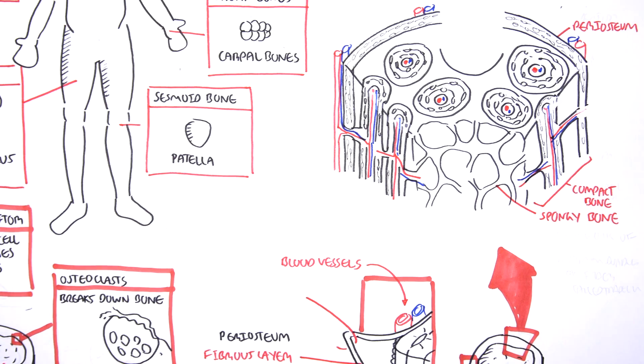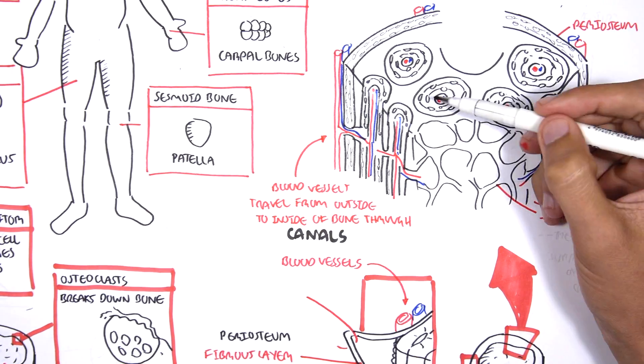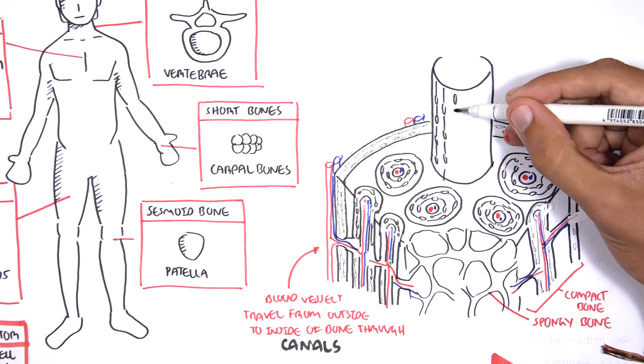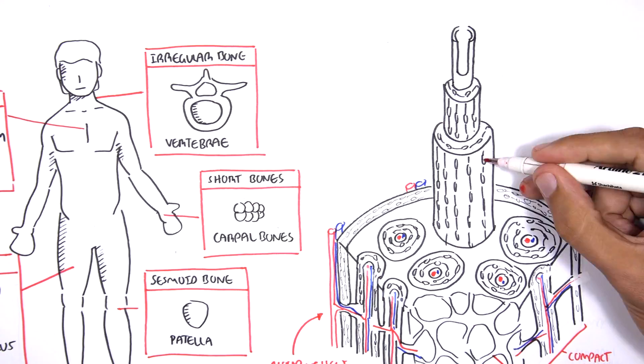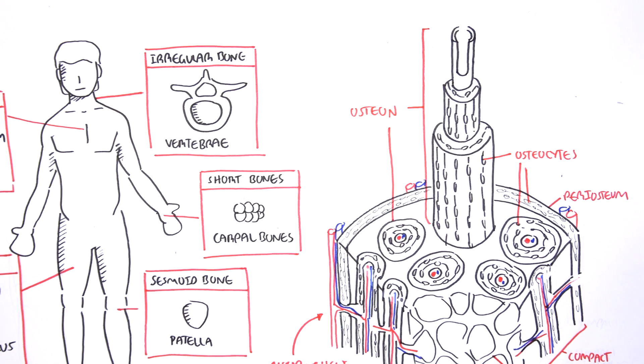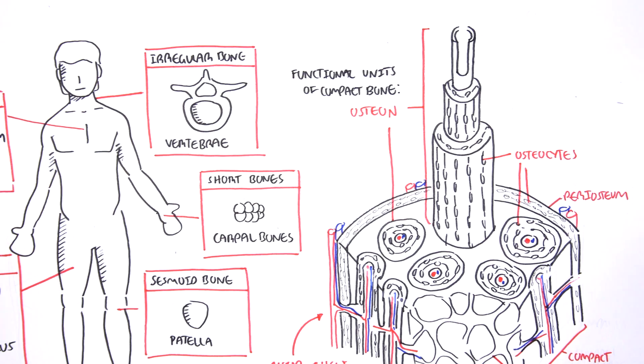The blood vessels travel from the outside to the inside of the bone through canals. Now remember, the compact bone is mainly made up of trapped osteoblasts, which are the osteocytes. They are actually organized into an osteon, which are the functional units of compact bone.